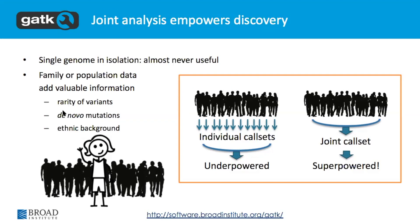It also helps determine the allele frequency. For example, if you have different exome kits and some kits do not have coverage at particular sites, you want to know the allele frequency - you need to figure out whether you're not able to call a variant because there was no data, so you just did not see any reads, or whether you did not call a variant because there was no variant. So you want to aggregate as much information as possible to update your likelihood of your genotypes and possibly filter out variants that you do not believe.